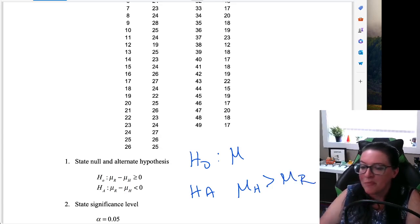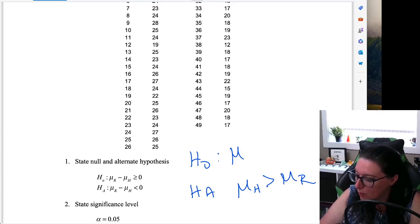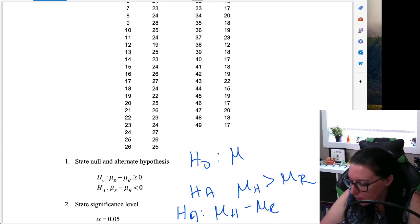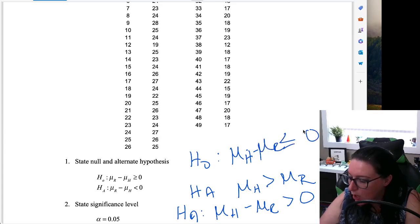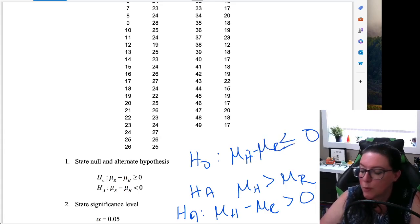And so we convert this though into hired minus rejected is greater than zero. And then the null hypothesis is that those who are hired minus those who are rejected are less than or equal to.